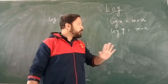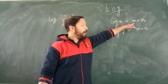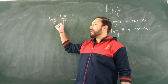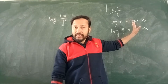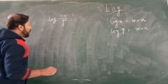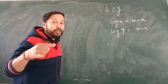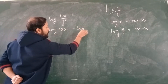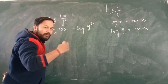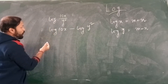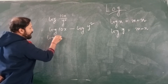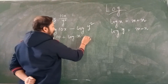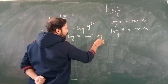Next question: two values are given — log x = m+n and log y = m−n. We have to find the value of log(10x / y²). So let us write it: log(10x/y²). Using the division rule: log 10x minus log y². Now, log 10x equals log 10 plus log x. And the 2 comes out, giving minus 2 log y.